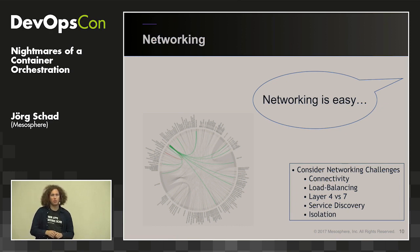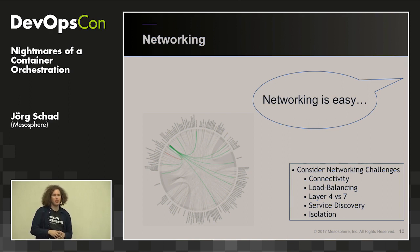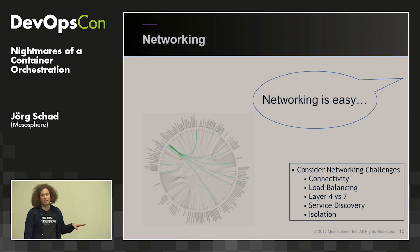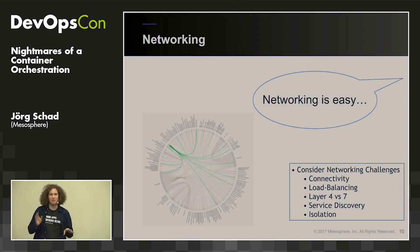Another downside of Istio is that by default it comes with the Envoy load balancer, which brings all your packets from kernel space into user space — a huge performance hit on your network performance.